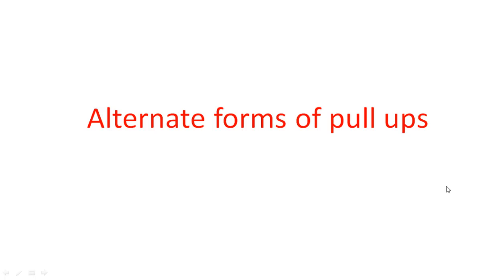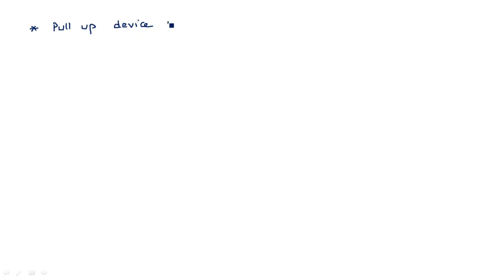In this video I am going to explain about the alternate forms of pull-ups. In the previous video I explained about the pull-up and pull-down device. A pull-up device makes the output logic high — when the pull-up transistor is in ON state, the output becomes logic high, that is output equals 1.